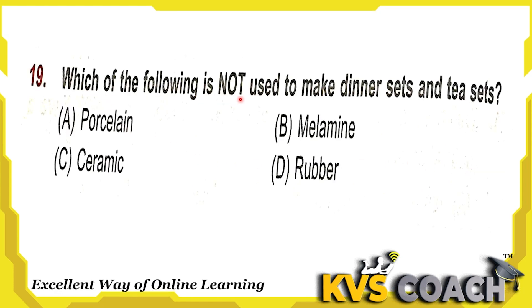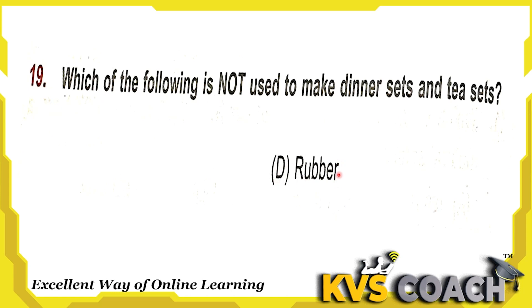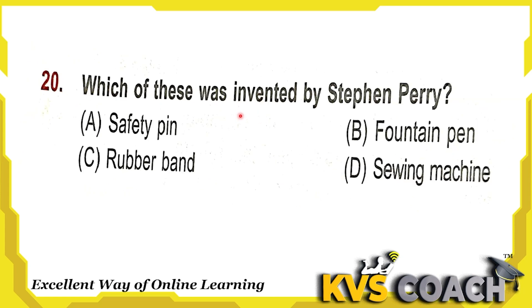Next question: which of the following is not used to make a dinner set and tea set? We have porcelain tea sets or dinner sets, melamine also, and ceramic also in our kitchen. But we don't have rubber tea sets or dinner sets. So the right answer is option D, rubber.